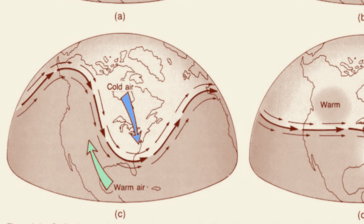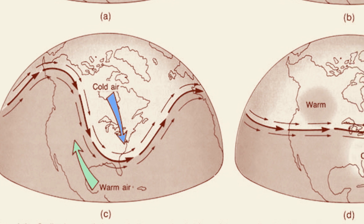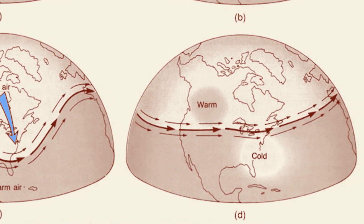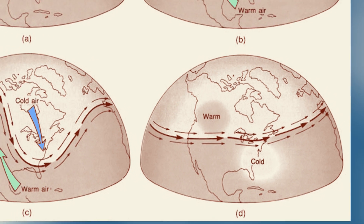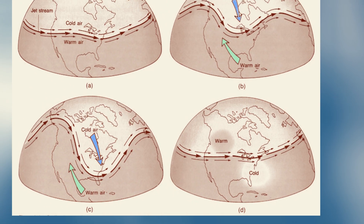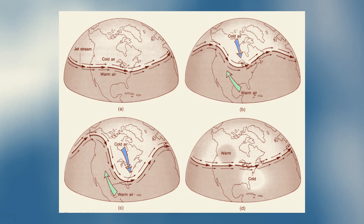Alternating high-pressure and low-pressure volumes, which are coupled, are called pressure waves, of which these so-called planetary waves are the ones with the largest wavelength — sometimes more than a thousand kilometers, or around 600 miles.